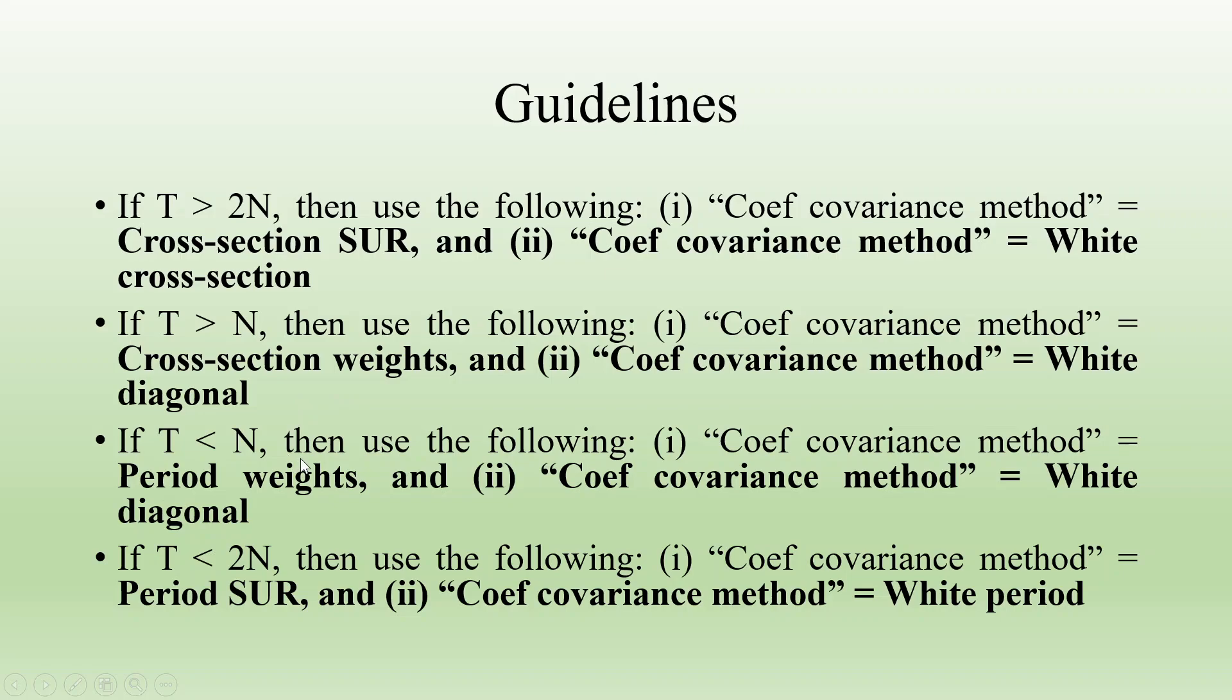If T is less than N, then use the following: coefficient covariance method with period weights and coefficient covariance method is white diagonal.